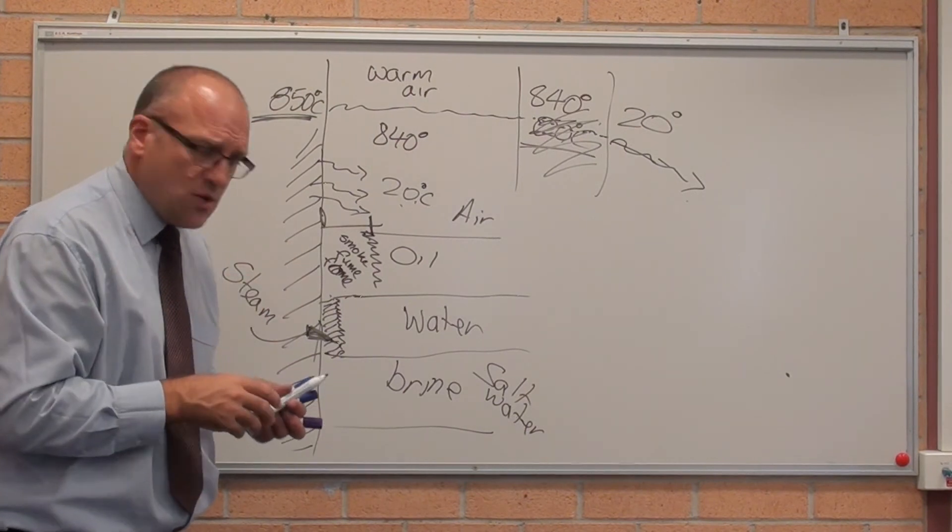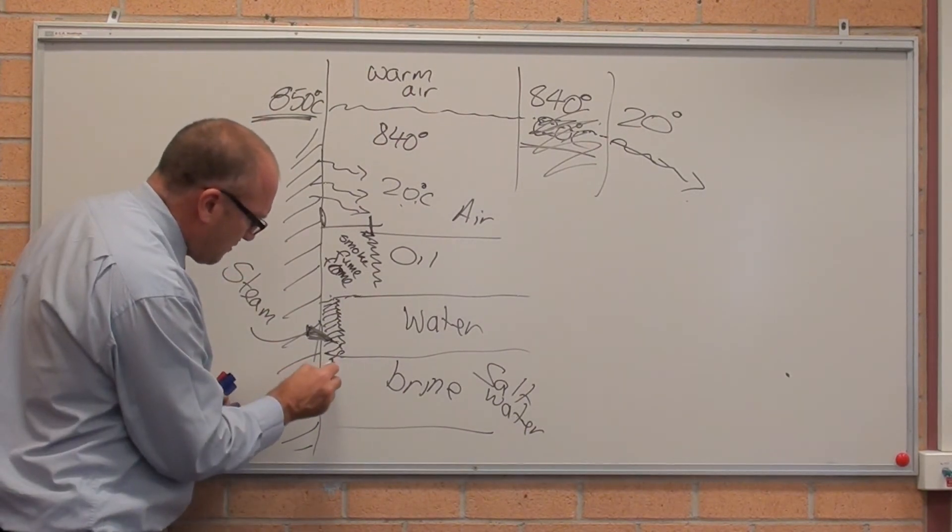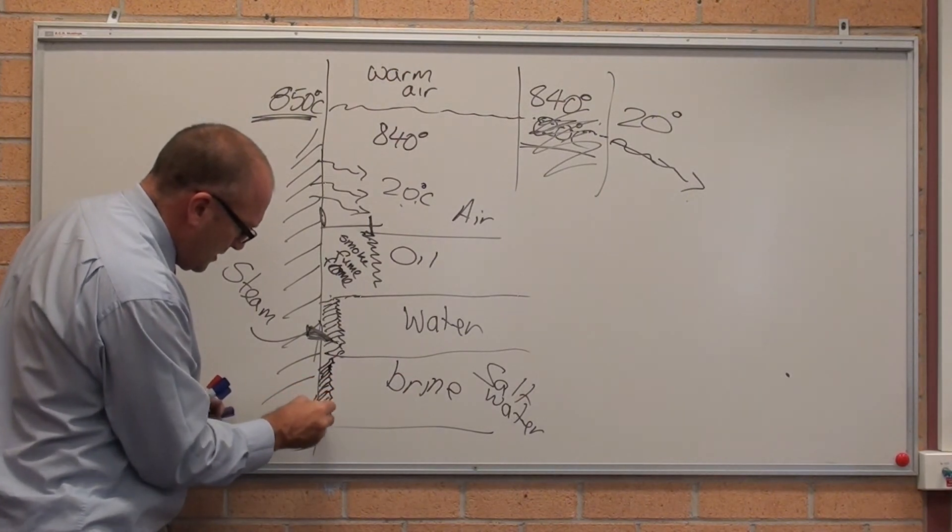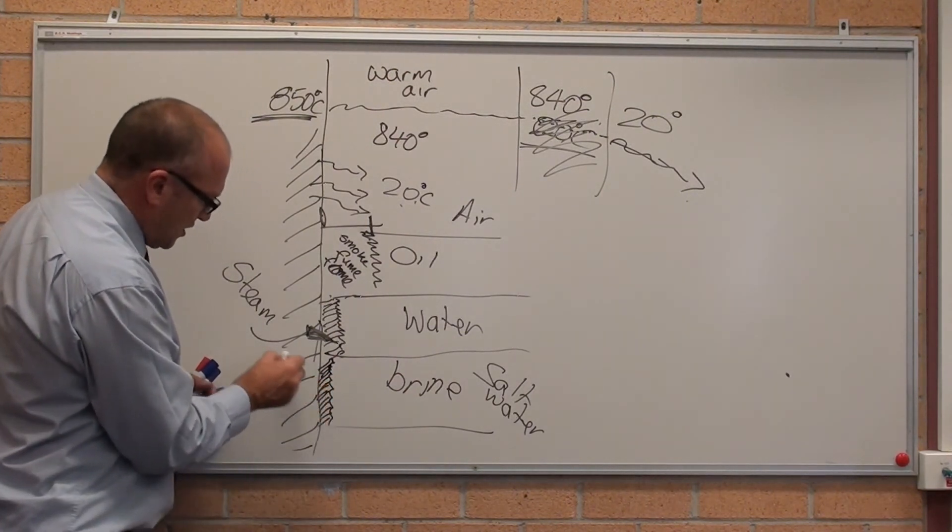the salt destroys the formation of steam in a uniform way and makes it discontinuous. So it pulses and it shakes around, and the end result is the layer of steam is thinner.